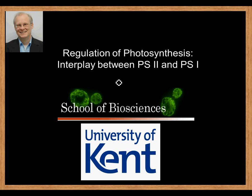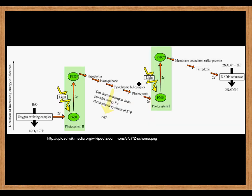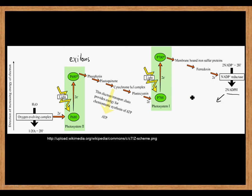We will in particular look at the interplay between photosystem 2 and photosystem 1. Let's quickly remind ourselves how these photosystems interact. Photosystem 2, P680, absorbs light at 680 nanometers and produces electrons in the excited state — sometimes called excitons — which are passed through soluble components like plastoquinone and plastocyanin to photosystem 1, which absorbs light at P700 at 700 nanometers, and then we go to NADP and produce NADPH, which goes into the Calvin-Benson cycle.